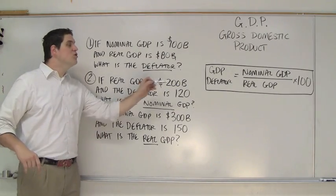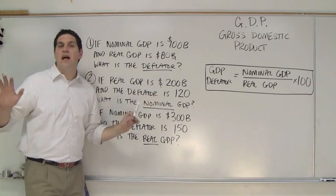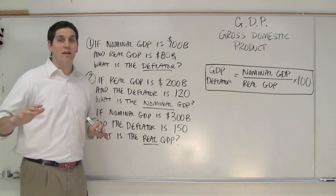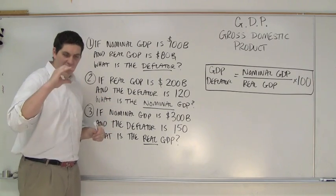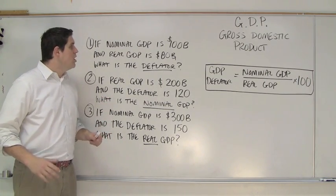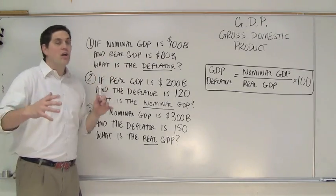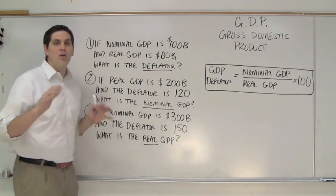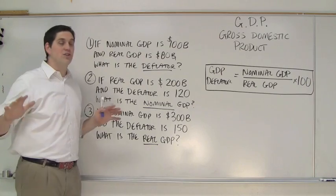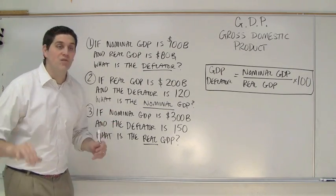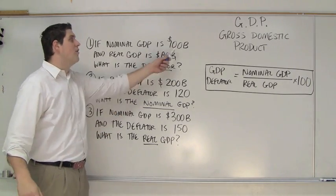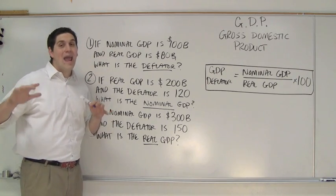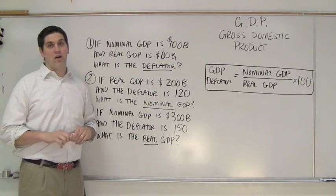Here we go, let's go over it. If you just use the equation, that's fine to pop out the answer. But understand the logic behind it — then you'll see if that number makes any sense. So for the first one, right now in our current economy, the GDP is $100 billion — the nominal GDP not adjusted for inflation. But when you adjust for inflation, that $100 billion of stuff is actually only $80 billion of stuff.